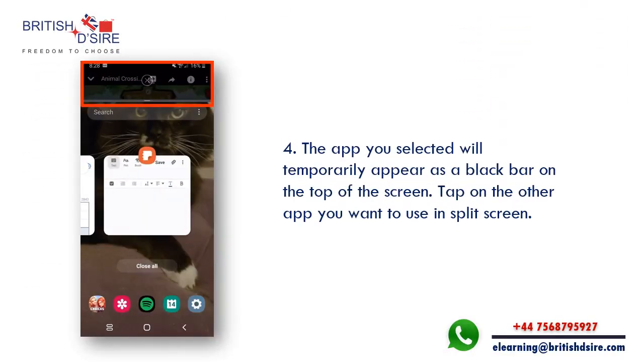Step 4: The app you selected will temporarily appear as a black bar on the top of the screen. Tap on the other app you want to use in split screen.